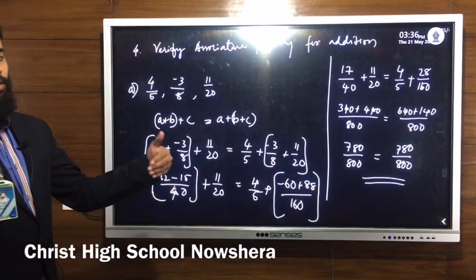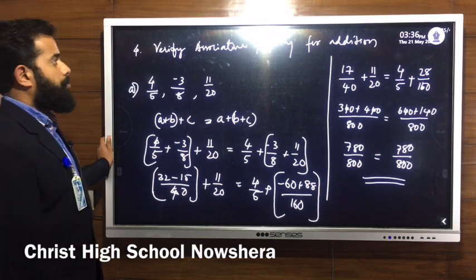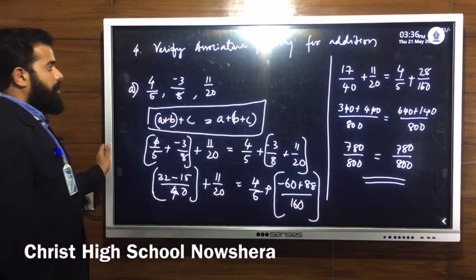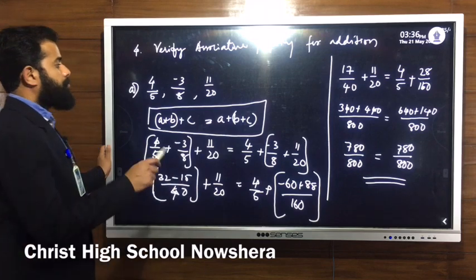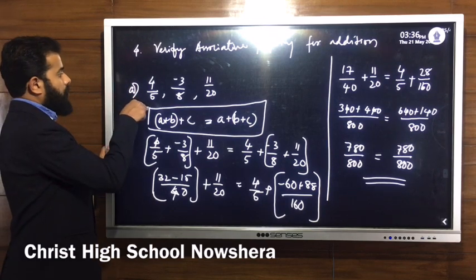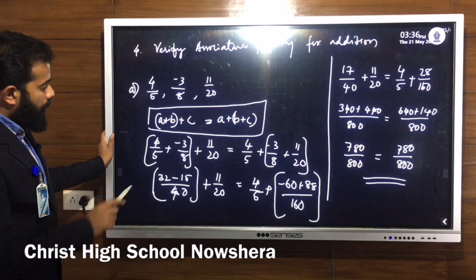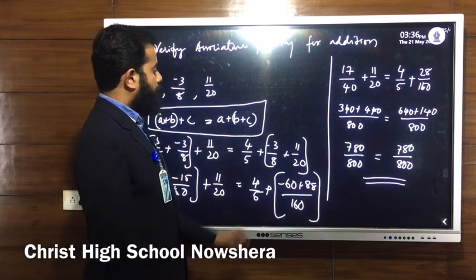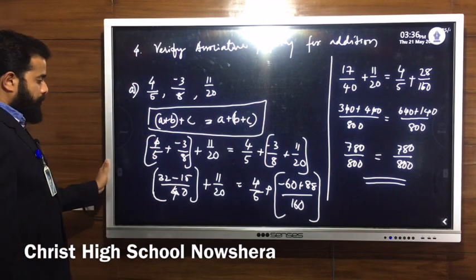Question number 4: verify the associative property for addition between the rational numbers. The general form is (A plus B) plus C equals A plus (B plus C). Substituting: A is 4 by 5, B is minus 3 by 8, and C is 11 by 20. Left side: (4 by 5 plus minus 3 by 8) plus 11 by 20. Right side: 4 by 5 plus (minus 3 by 8 plus 11 by 20).